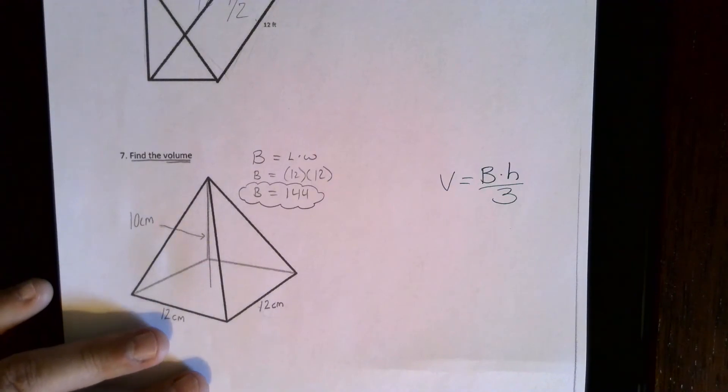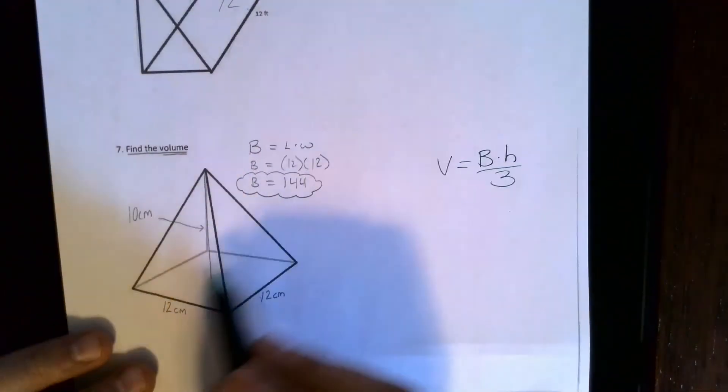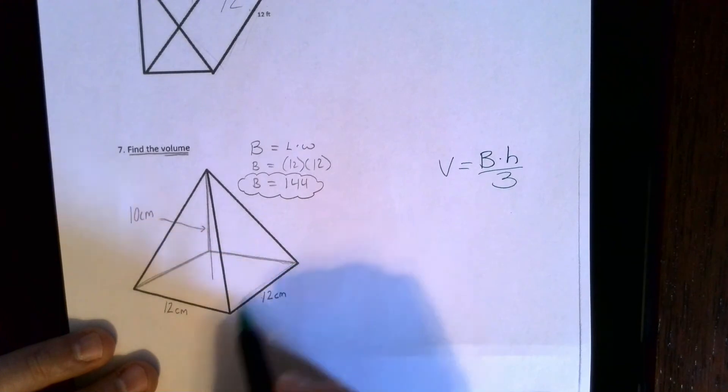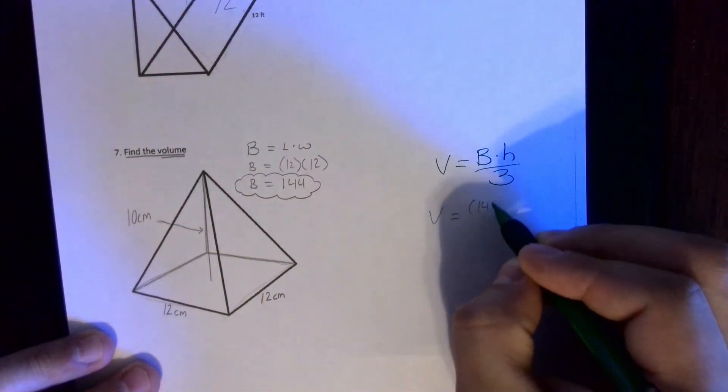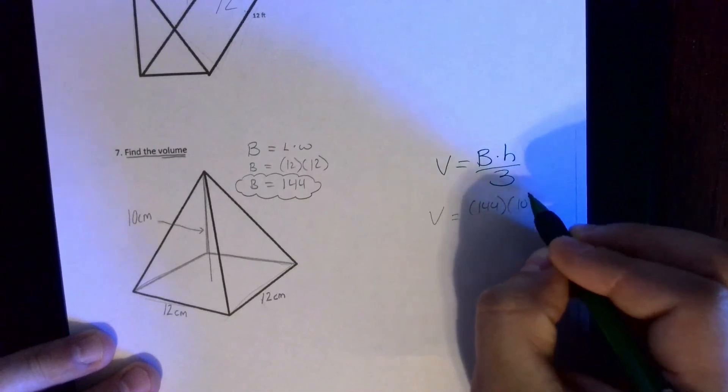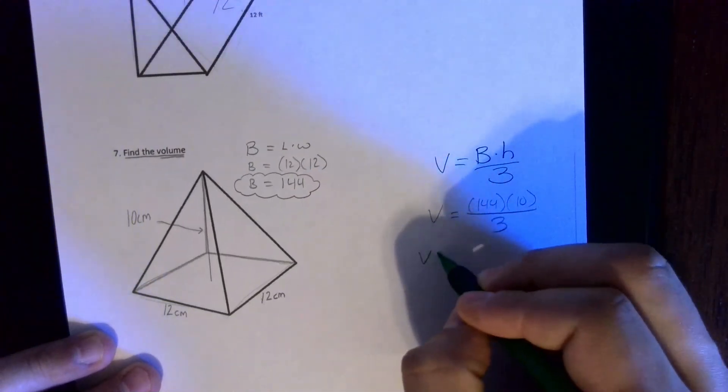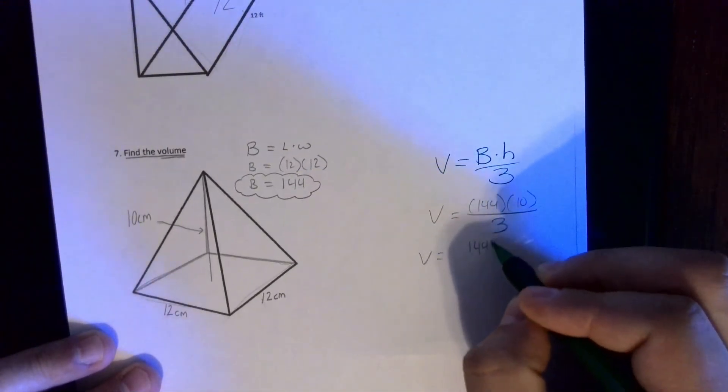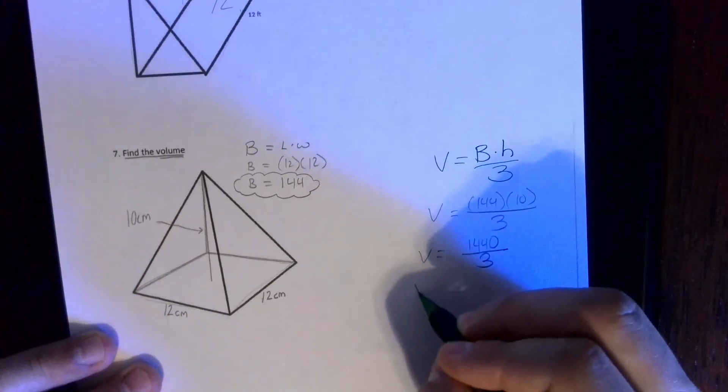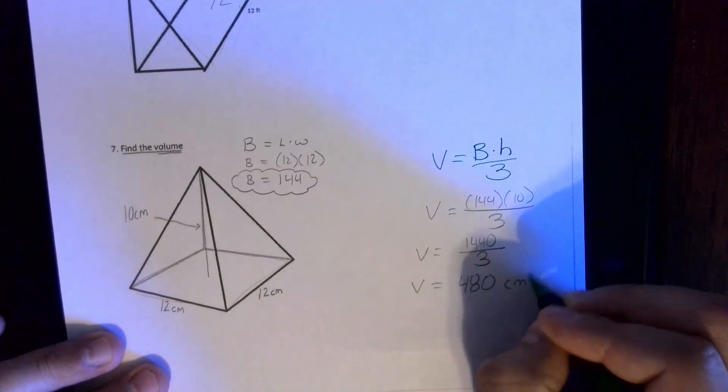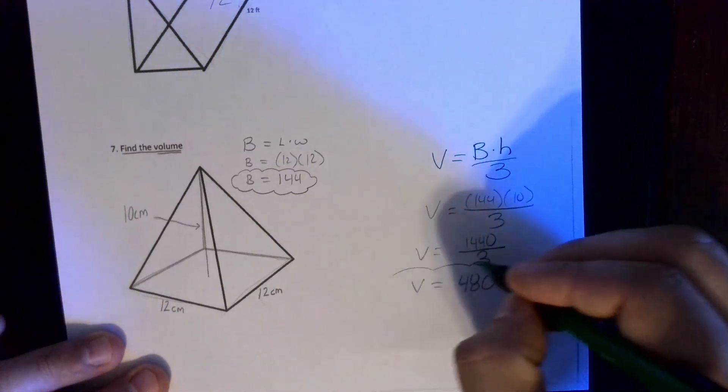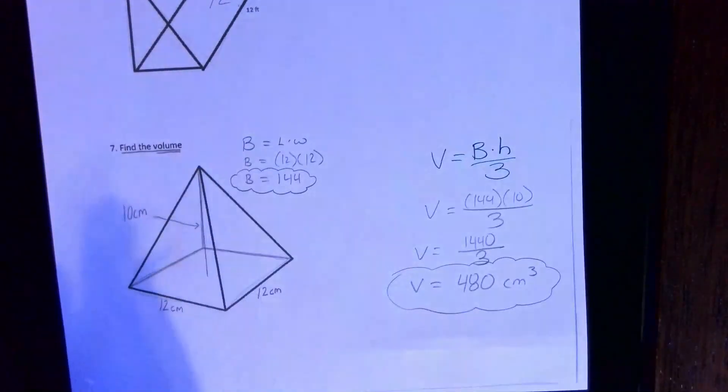I calculated big B, the area of the base, that's just the area of the square, 12 by 12, that's 144. So I plug in 144 times 10 divided by 3, that's 1440 divided by 3, which gives me a final answer of 480 cubic centimeters for the volume.